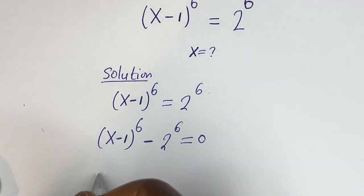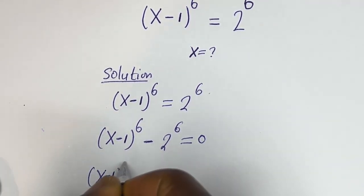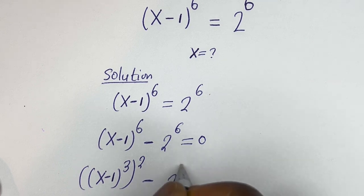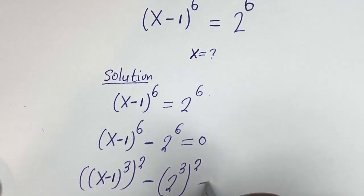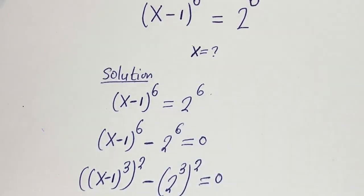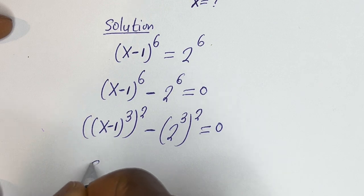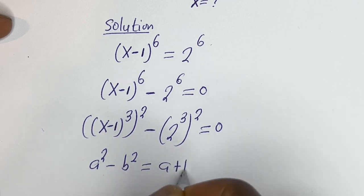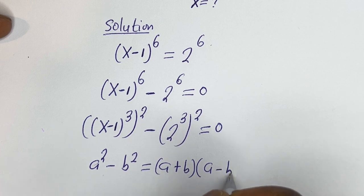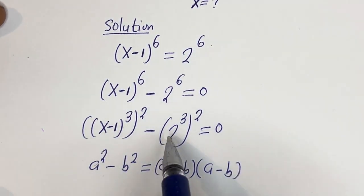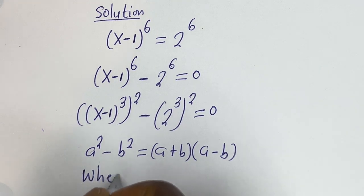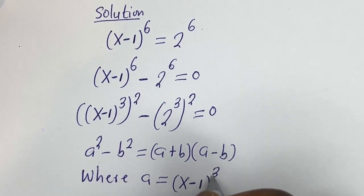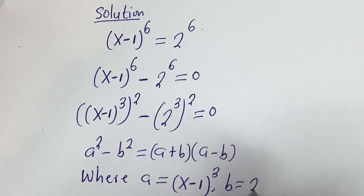Now this can be written as (x minus 1) to the power of 3, squared, minus 2 to the power of 3, squared, is equal to 0. Take note that if you have a squared minus b squared, this is equal to (a plus b)(a minus b). Here a is equal to (x minus 1) to the power of 3, and b is equal to 2 to the power of 3.